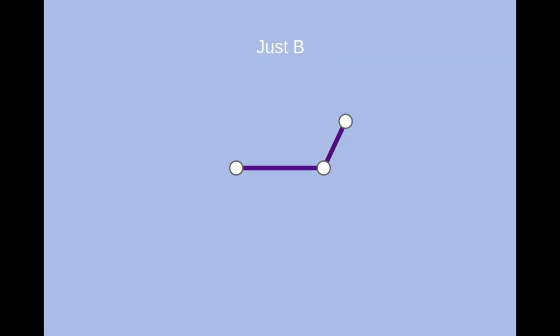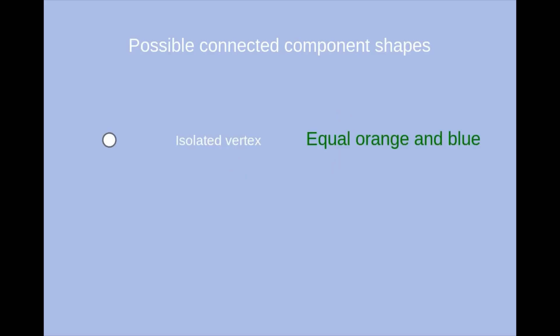Now, notice that all the matched edges from s and from b are represented in the combined graph, so for b to be a bigger matching, there must be more blue edges than orange edges here. So which connected components account for the difference in edges? It can't be the isolated vertices, they don't have any edges in them.